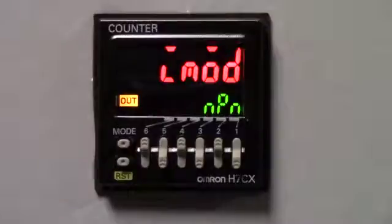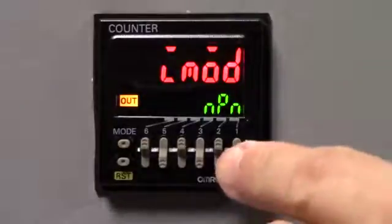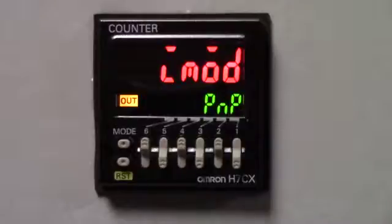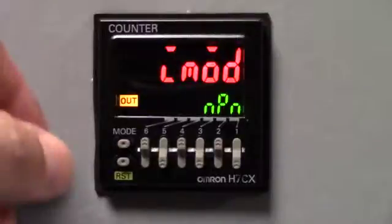Next is our input, IMOD. This function here, this dictates to us what function mode will be needed for the input, NPN or PNP. Now, if you're using a basic switch or a push button or a limit switch, you could keep it on the NPN. And obviously, if you have a PNP input, you would press the number one key. And then that will allow you to accept a PNP input into the counter. Seeing how we're using a push button, we're going to keep it at NPN. So next, we're going to press the mode key to advance to the next function.